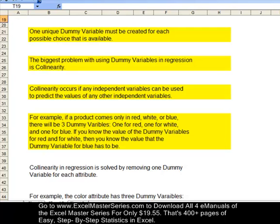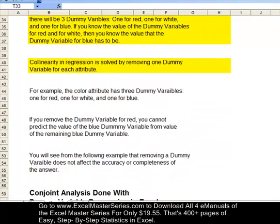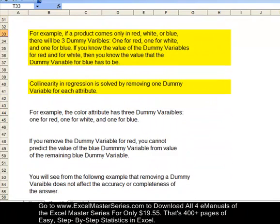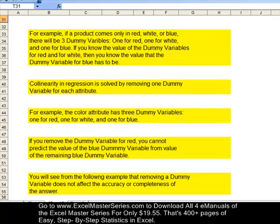You can solve collinearity in regression by removing one dummy variable for each attribute. For example, if a product has three dummy variables for color—one for red, one for white, and one for blue—if you remove the dummy variable for red, then you cannot predict the value of the blue dummy variable based on the value of the remaining white dummy variable. You will see from the following example that removing a dummy variable does not affect the accuracy or the completeness of your answer at all.